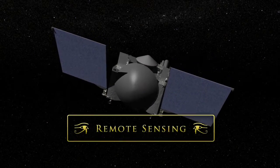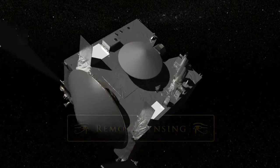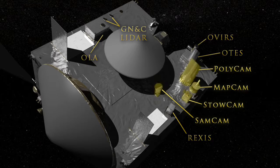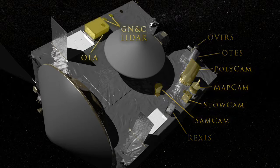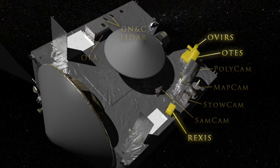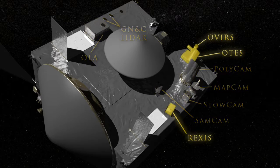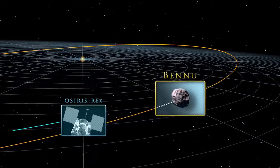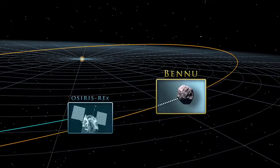The OSIRIS-REx payload contains several instruments for remote sensing observations, including high-resolution cameras, LIDAR, and X-ray visible light and infrared spectrometers. Knowing the physical properties of Bennu will help scientists to refine its orbit over time.